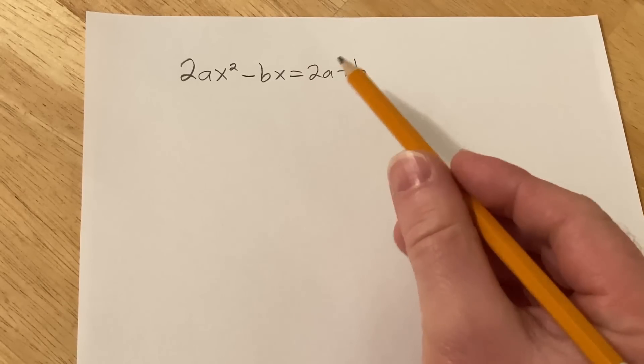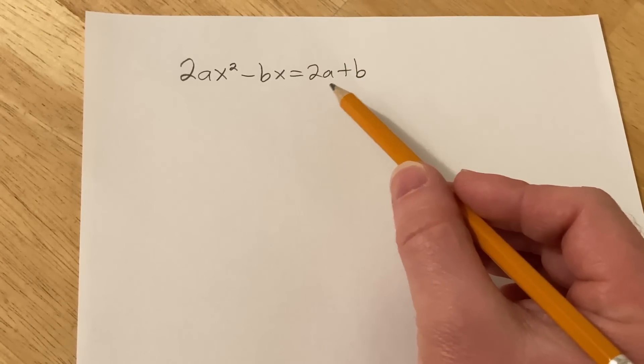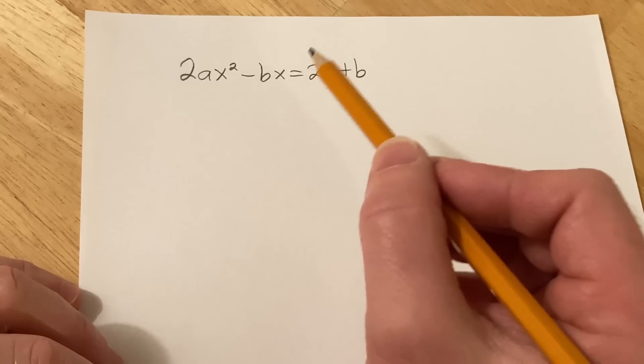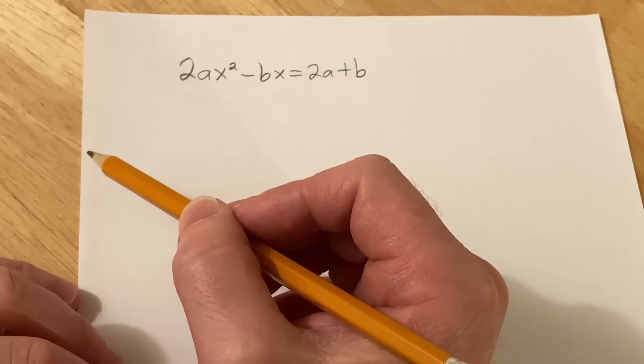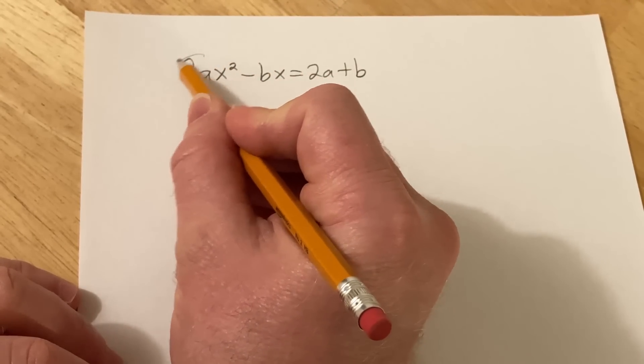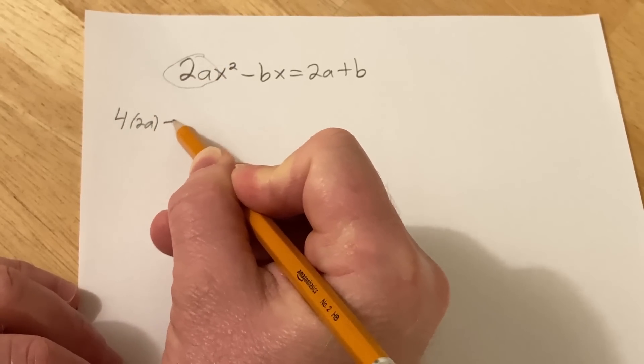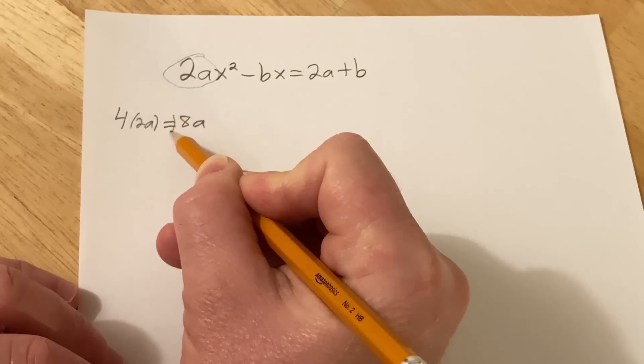Now it's no joke. We've got 2ax squared minus bx equals 2a plus b. The best part is I haven't even tried to do this. So I'm going to do it on the spot and see if it works. Step 1, take whatever is here, multiply it by 4. So you have 4 times 2a, which is equal to 8a.